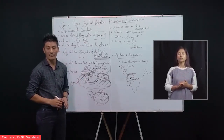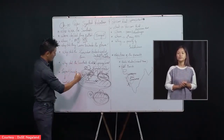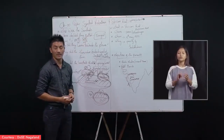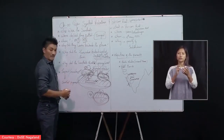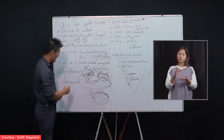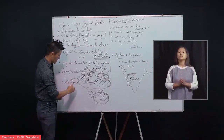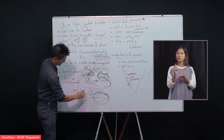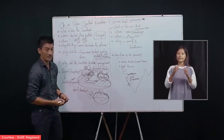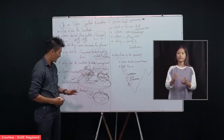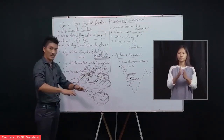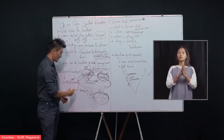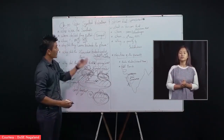Although the Santal Rebellion failed, the positive impact of this rebellion was that afterwards the British demarcated or created a separate Santal state known as Santal Parganas. 'Parganas' here means a small unit or district. So the British demarcated a separate area for the Santals which was known as Santal Parganas, or a Santal district. This is all about the Santal Rebellion.